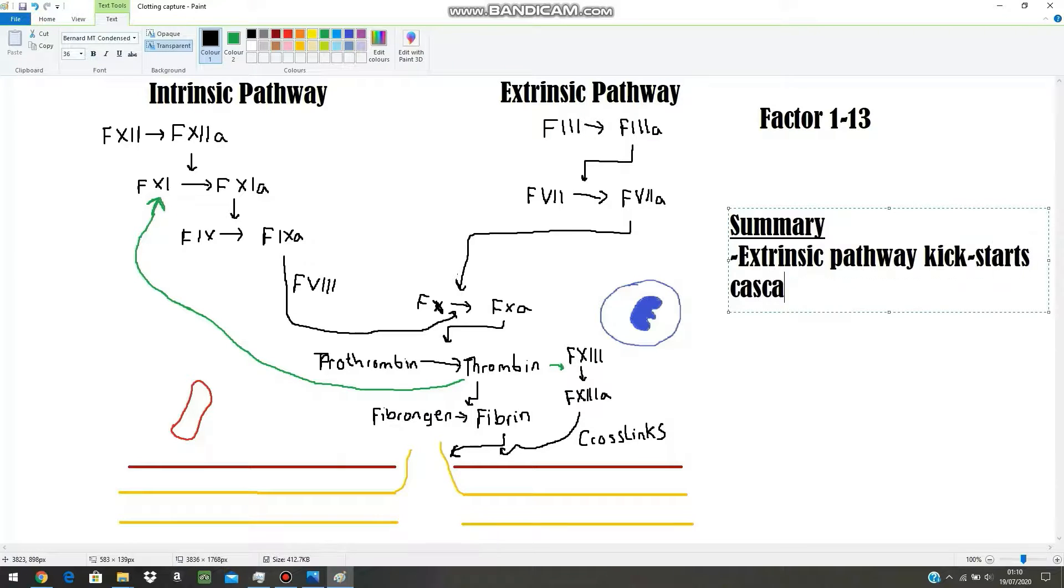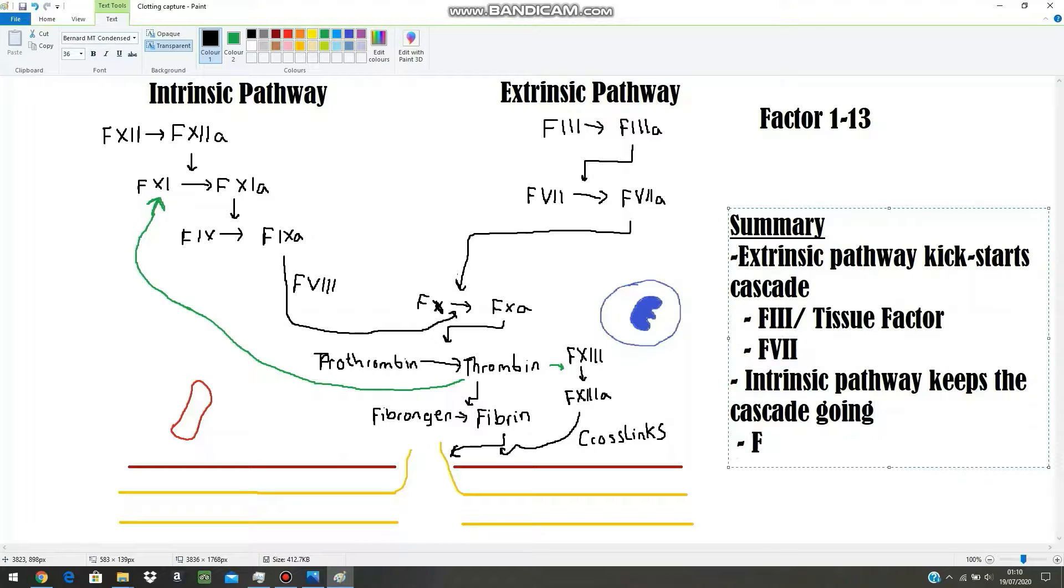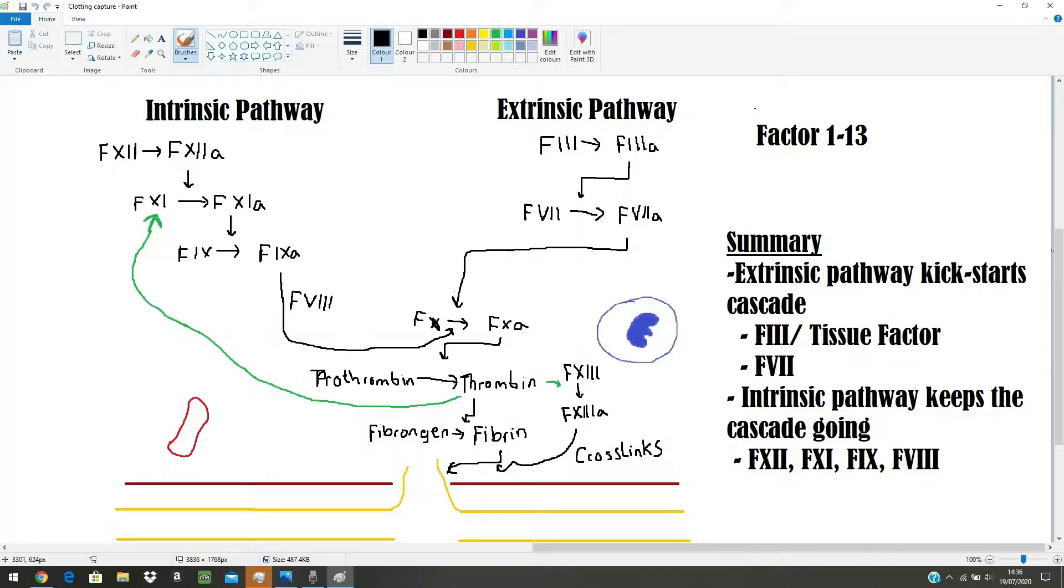So in summary, some kind of trauma kickstarts the extrinsic pathway and this starts the clotting cascade. This includes factors 3 or tissue factor as well as that factor 7. The intrinsic pathway keeps the cascade going and includes factors 11, 12, 9, and 8.